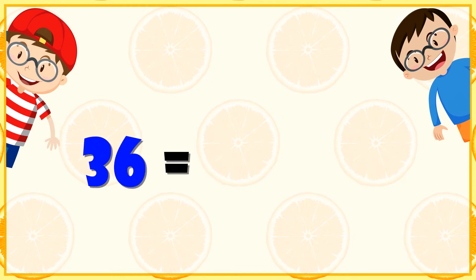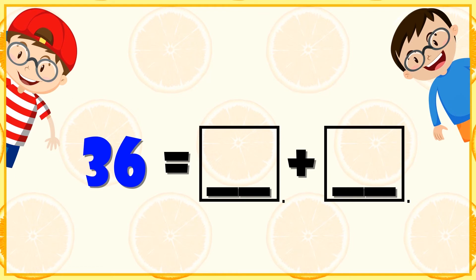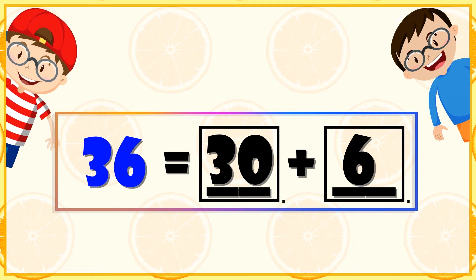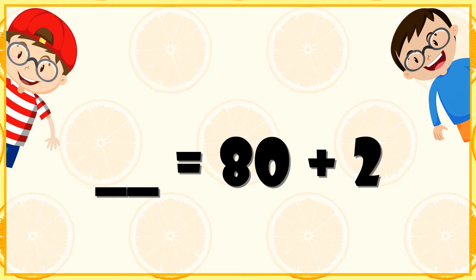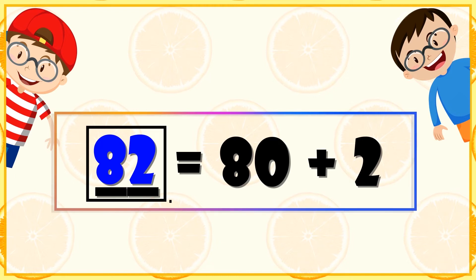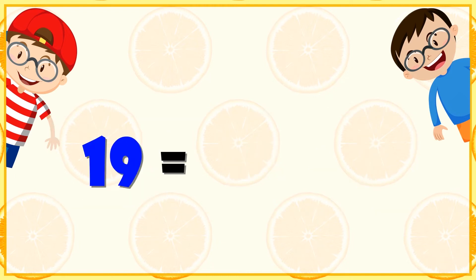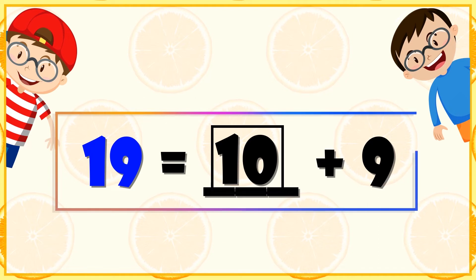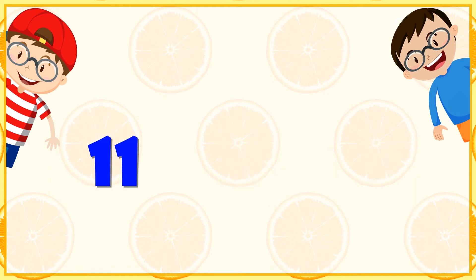36 is equal to dash plus dash — what will come to make 36? 30 plus 6 will make 36. Dash is equal to 80 plus 2 — 80 plus 2 will make 82. 90 is equal to dash plus 9 — what will come? 10 plus 9 will make 19.